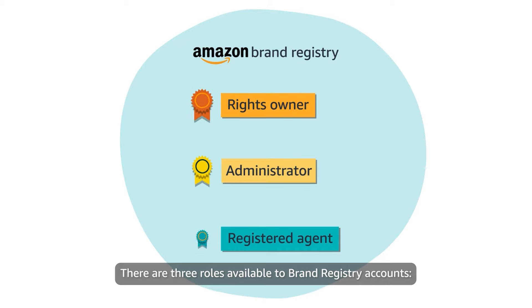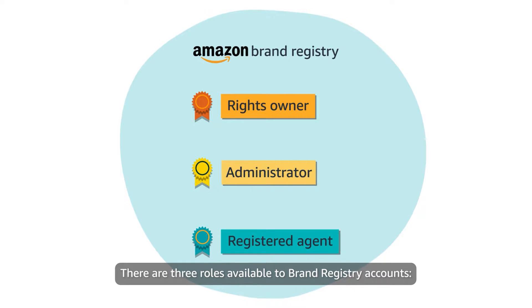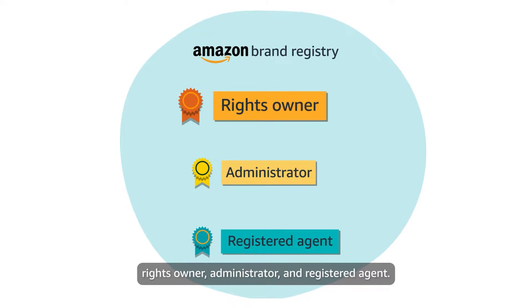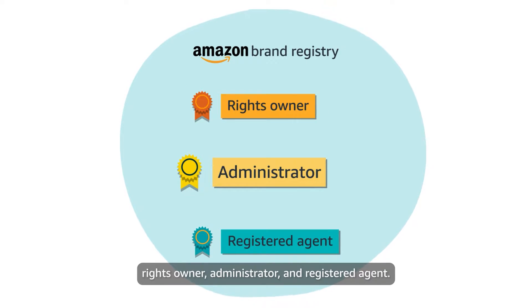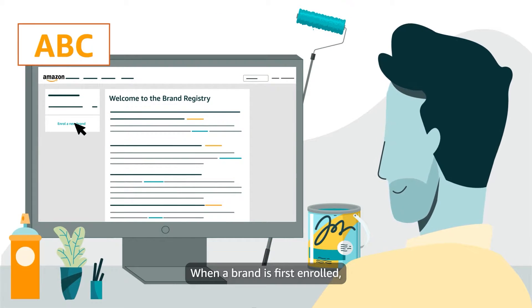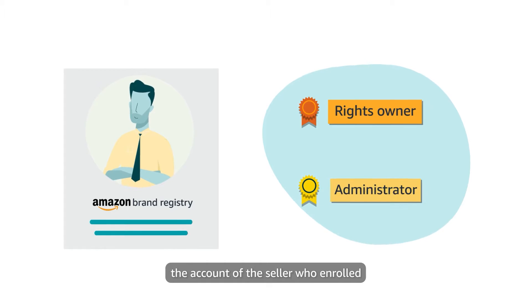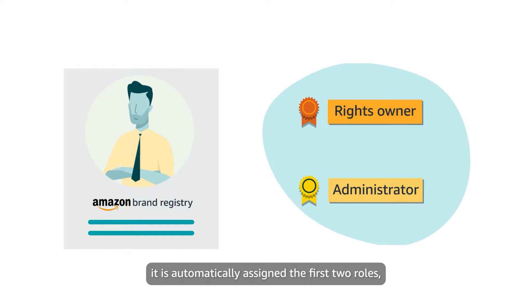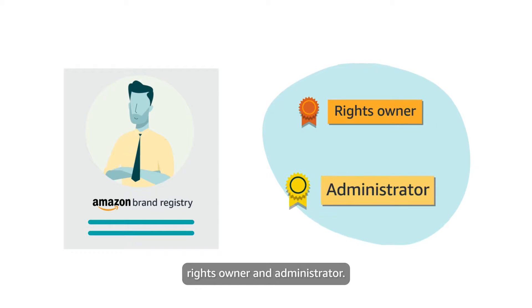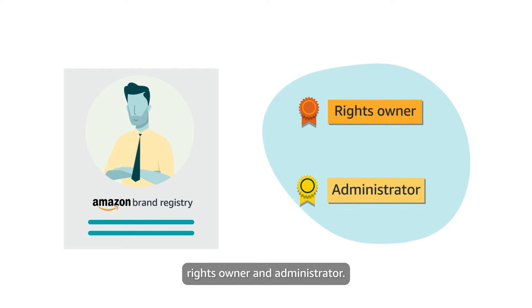There are three roles available to Brand Registry accounts: Rights Owner, Administrator, and Registered Agent. When a brand is first enrolled, the account of the seller who enrolled it is automatically assigned the first two roles — Rights Owner and Administrator.